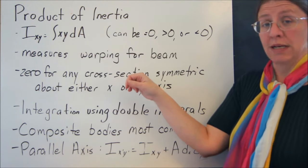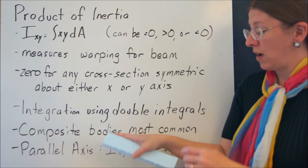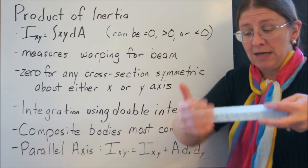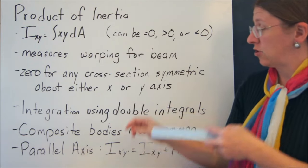Any time you have a cross-section that is symmetric about either the x or y-axis, you can bend it about the x-axis or the y-axis and cross-sectional planes remain plane.